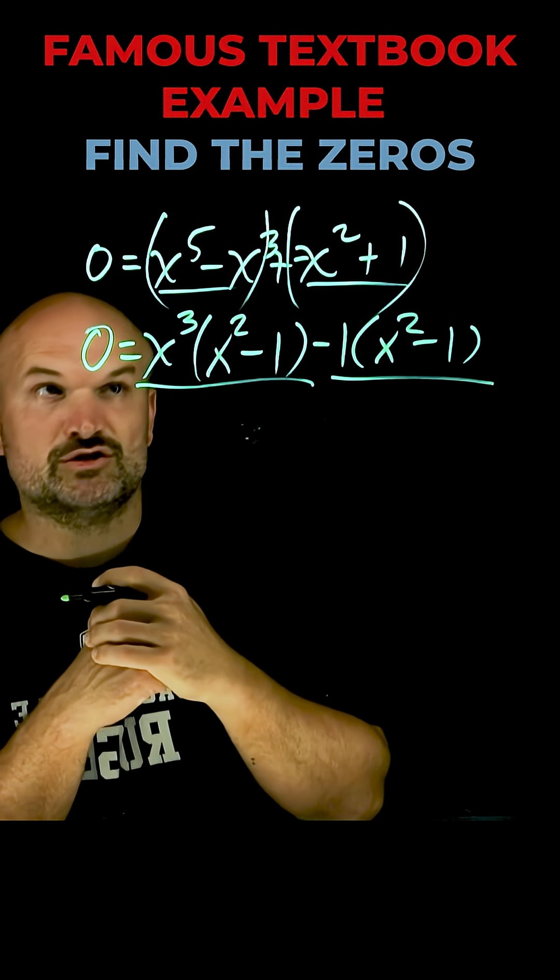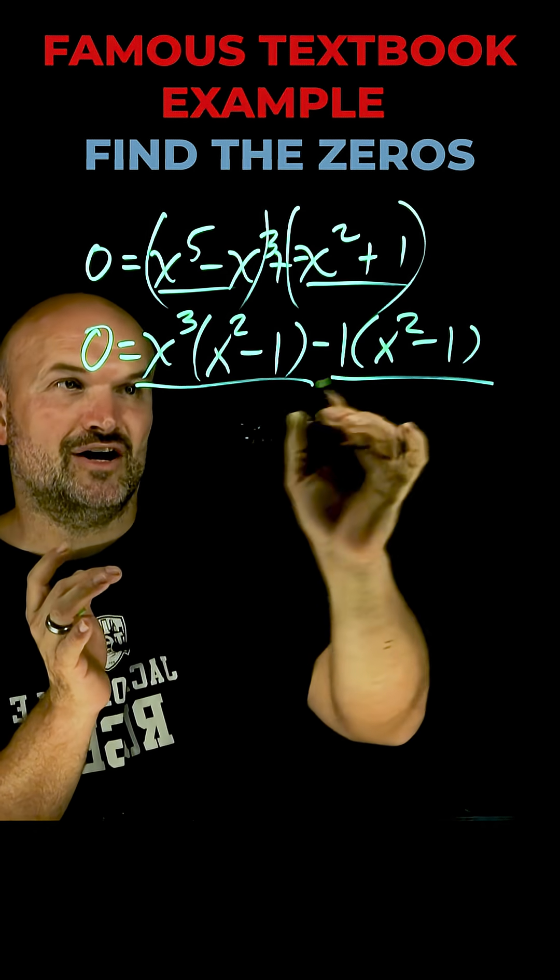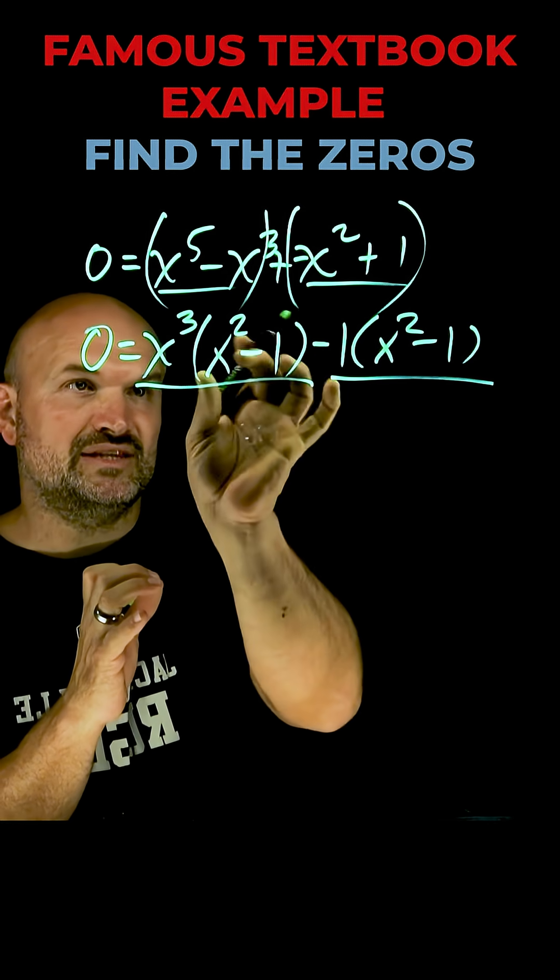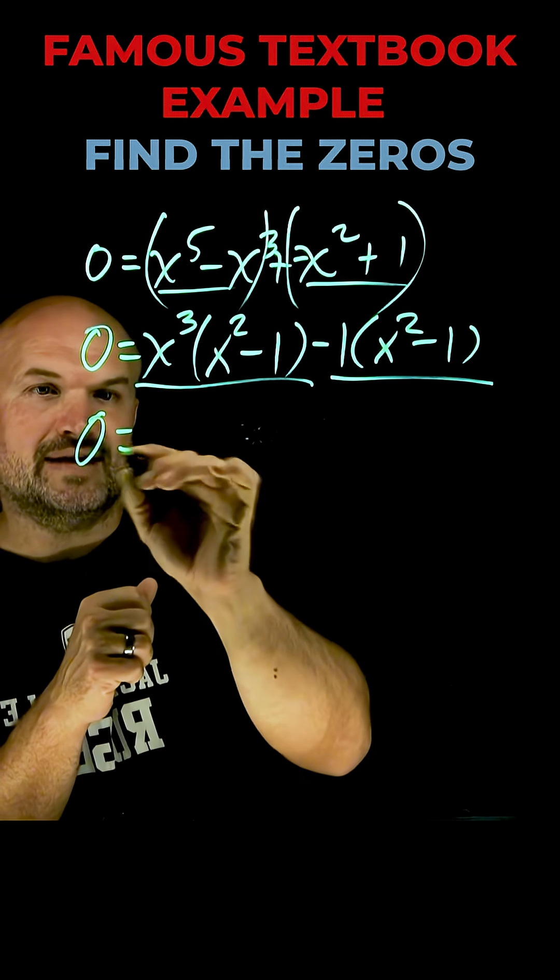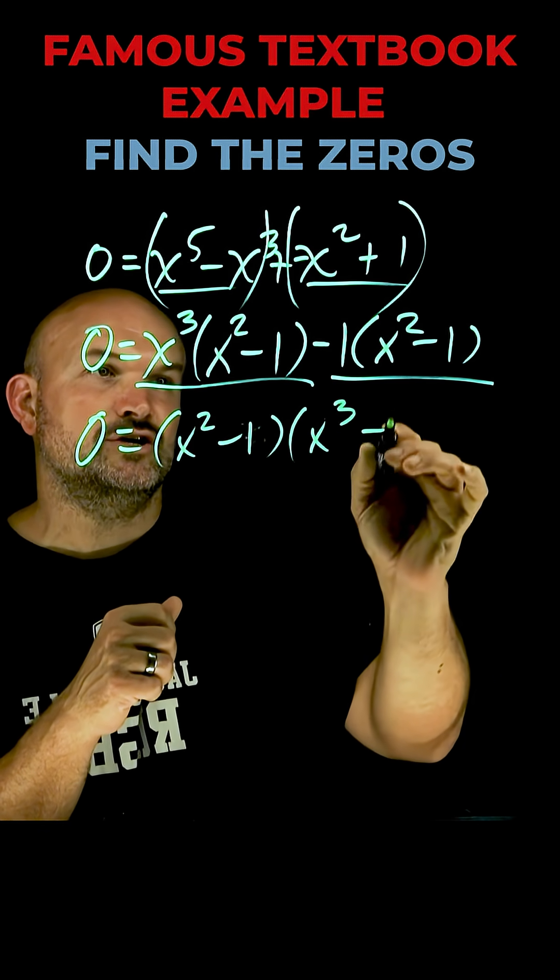Now factoring by grouping is factoring twice. You first factor out the GCF of your first two terms, and then you factor out the GCF of these two terms. You recognize these two share an x squared minus one. So now I can factor out an x squared minus one, and left over is going to be x cubed minus one.